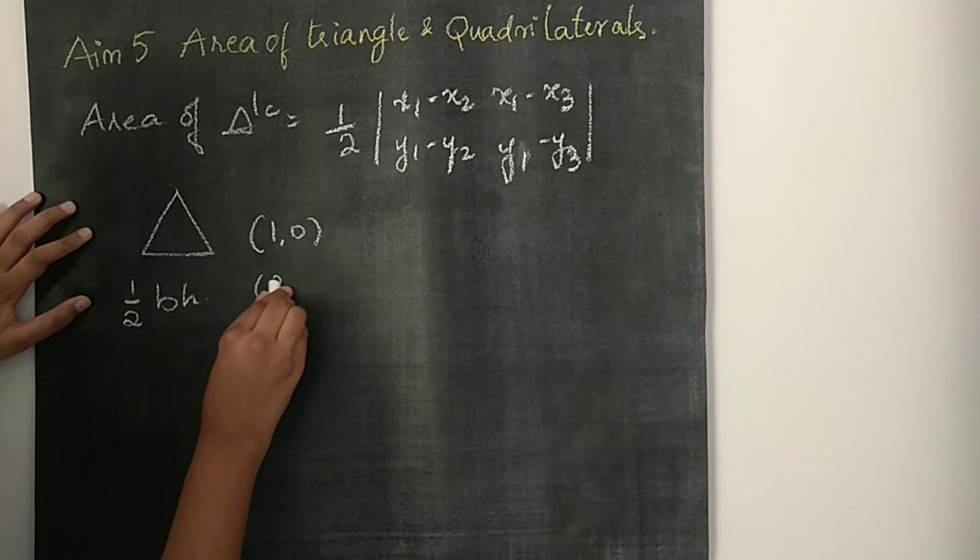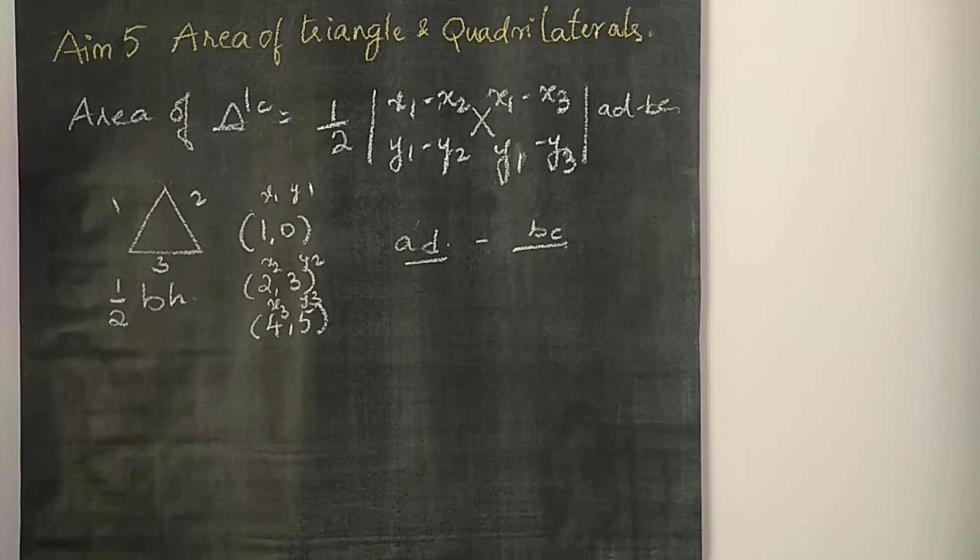After substitution, the second step will be ad minus bc. That means you will take the difference of x-values and the difference of y-values, then multiply and subtract them — that is ad minus bc. So a, b, c, d — that's why we get the result like this.